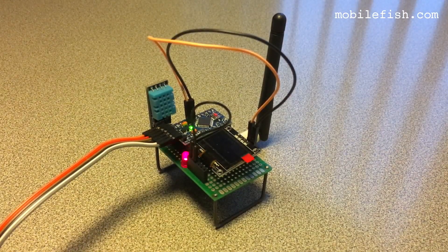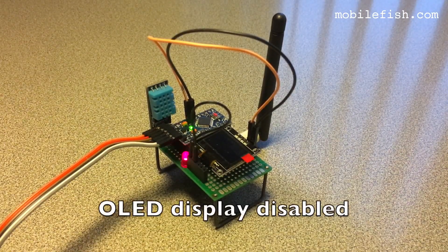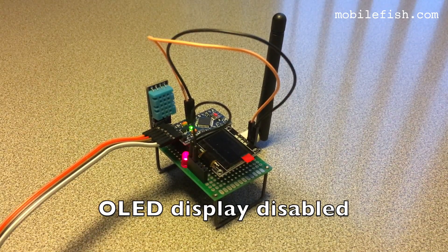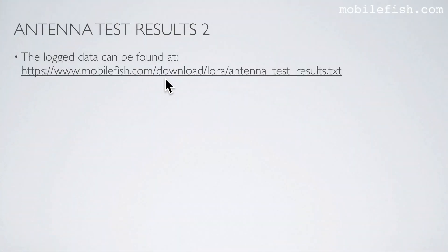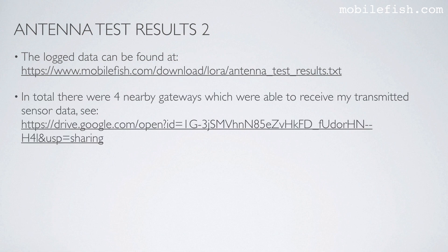To conduct the test I have placed my end device indoors at an altitude of 11 meters, in front of a window. The logged data can be found at this location. In total there were four nearby gateways which were able to receive my transmitted sensor data — see this Google map.